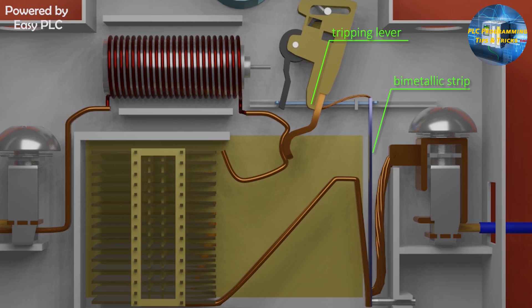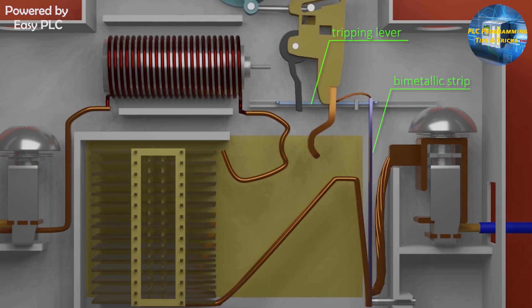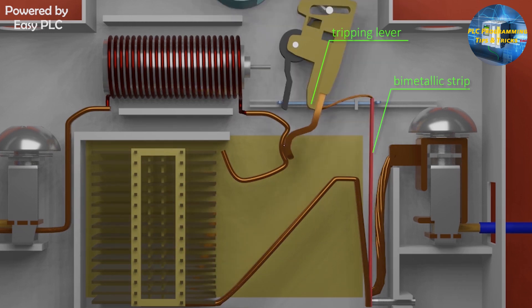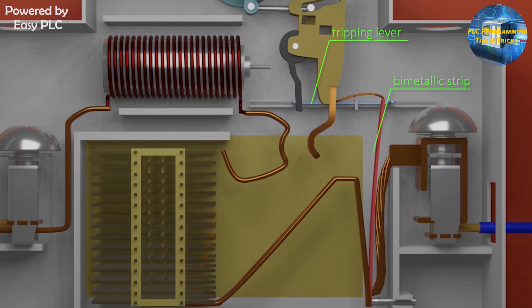When this bimetallic strip bends, it also moves the tripping lever backwards and tripping mechanism gets activated and MCB trips and cuts the flow of the current by opening the contacts. So this is how a MCB miniature circuit breaker works.